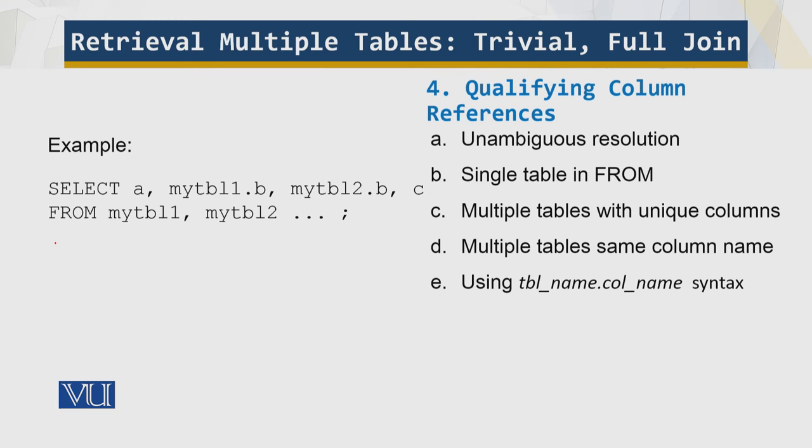Qualifying the column references. References to the table columns throughout the select statement must resolve unambiguously to a single table named in the from clause. If only one table is named, there is no ambiguity because all columns must be columns of that table. If multiple tables are named, any column name that appears in only one table is similarly unambiguous. However, if a column name appears in multiple tables, references to the column must be qualified by the table name using table underscore name dot column underscore name.